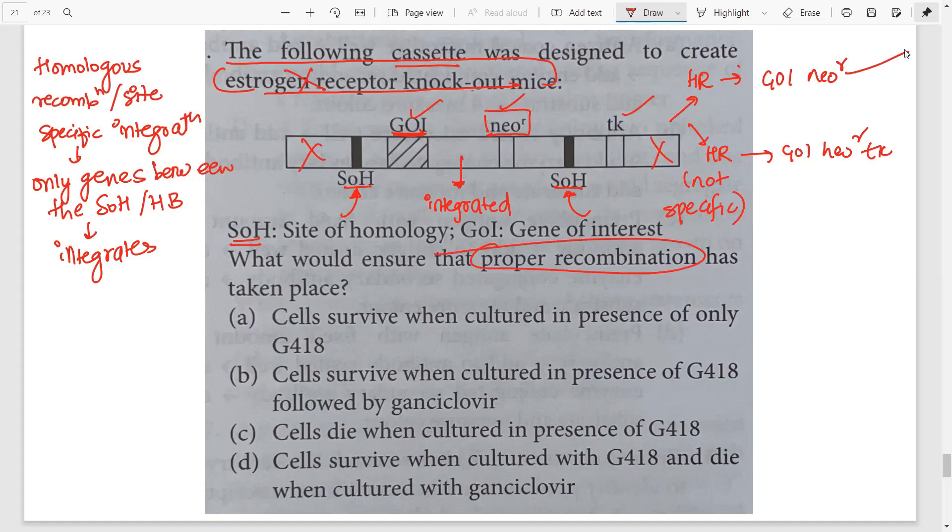That means if proper recombination has taken place, the cells should have the neomycin resistance gene and should not have the TK gene because this is outside the site of homology. So if it has the neomycin gene, it will be able to resist the compound G418. So it will have resistance to G418, and if it is TK minus, then also it will be resistant to ganciclovir because presence of TK will lead to sensitivity to ganciclovir.